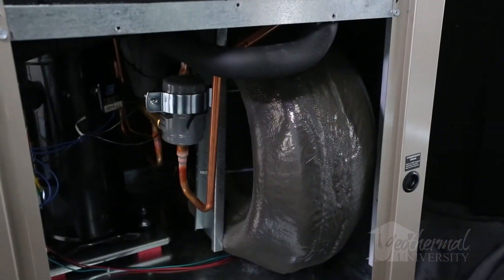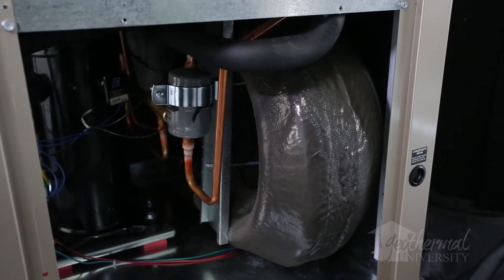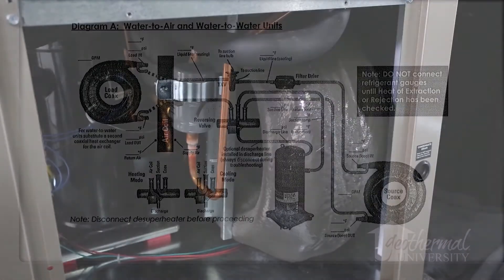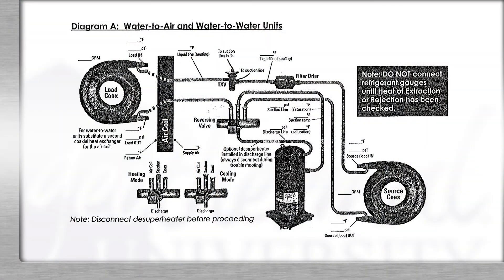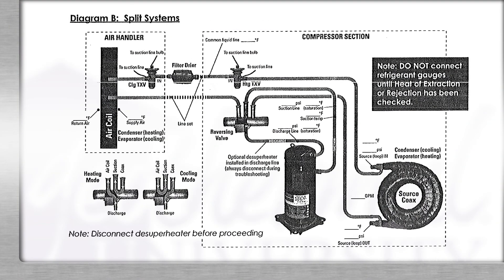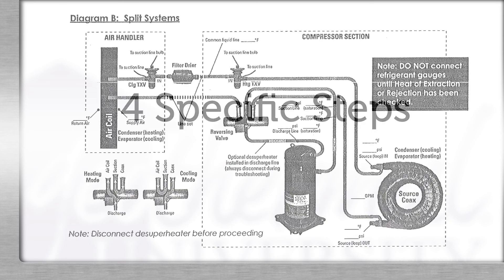The system can have a small leak in the coax and still function. As we mentioned previously, a heat of extraction or rejection test would uncover a capacity loss. We'll divide these test steps into four different methods.